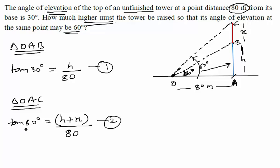So now, we have to calculate X. X is the height of the tower which we have to raise so that the angle of elevation changes from 30 to 60. So, you have to eliminate H. If you eliminate H using these two equations, 1 and 2, you should get the value of X.